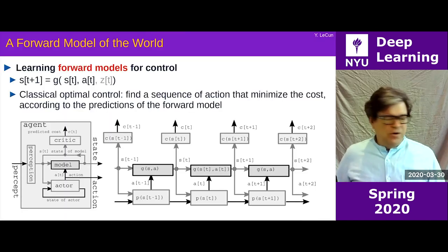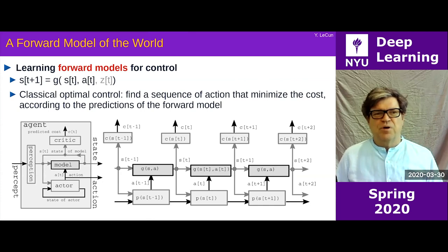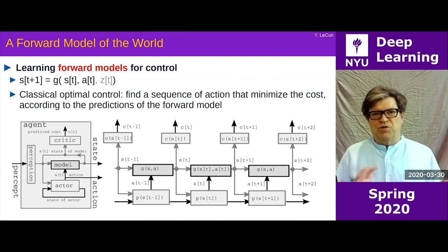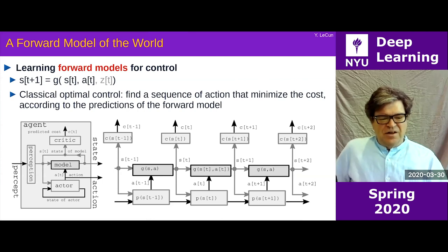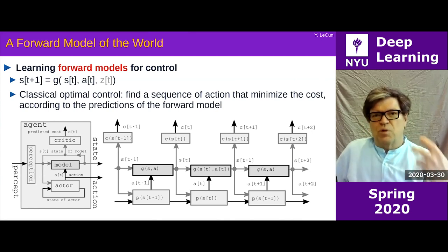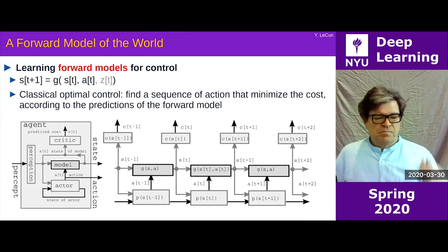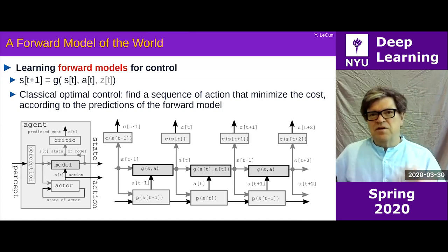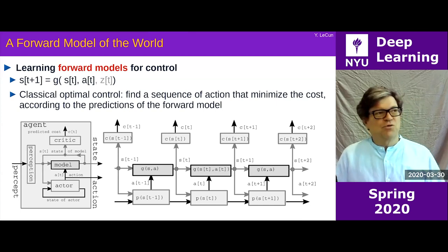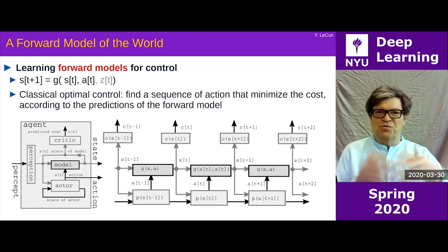If you want to give an idea of the architecture of an autonomous intelligent system, it would be composed of essentially four major blocks. It has a perception module that observes the world and computes a representation of the state of the world — S(t) — at time t. This is necessarily an incomplete representation because we can't observe the entire universe at once; we only observe what's immediately around us, and there are occlusions and unobservable internal states.